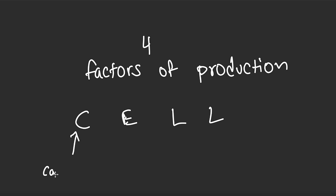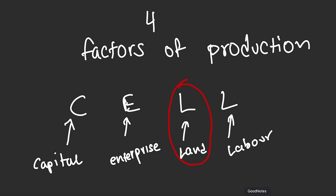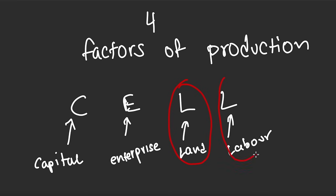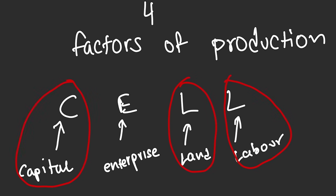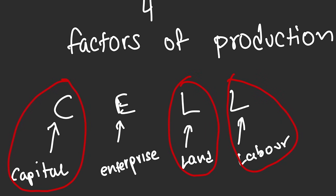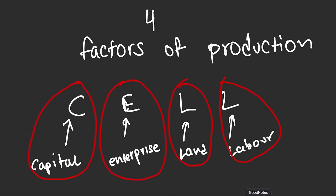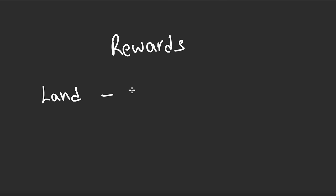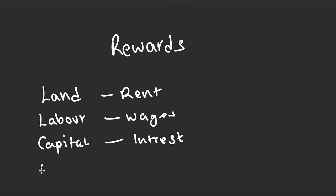We have four factors of production — you can remember this with CELL: Capital, Enterprise, Land, and Labor. Land refers to the natural resources used in production. Labor is the human resources used in production. Capital is the manufactured resources used to produce goods and services. Enterprise is the skills and willingness of a person to take risks. The rewards for the factors of production are: Land gets rent, Labor gets wages, Capital gets interest, and Enterprise gets profit.